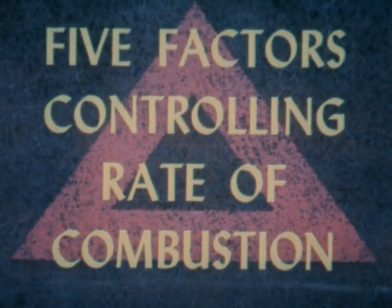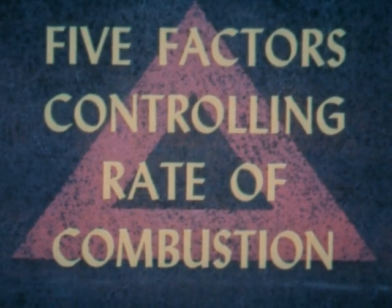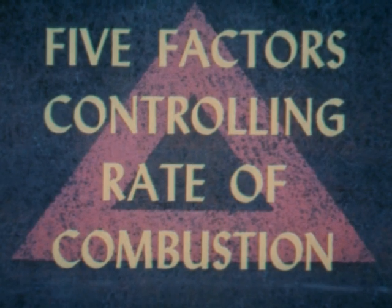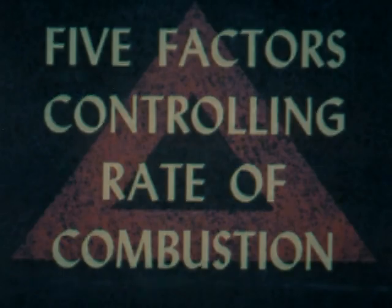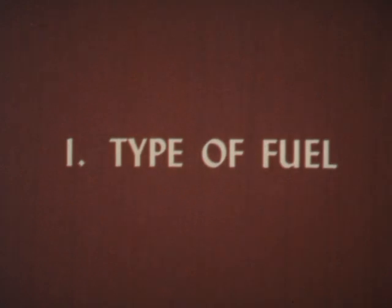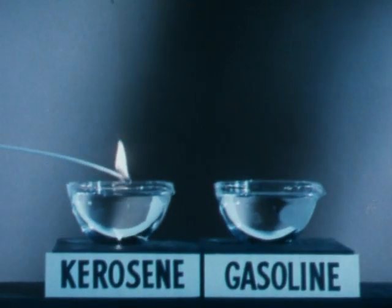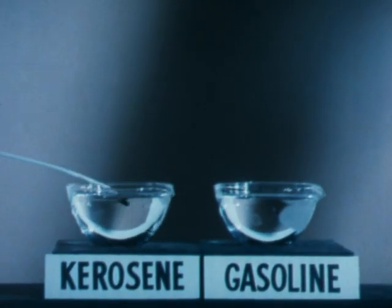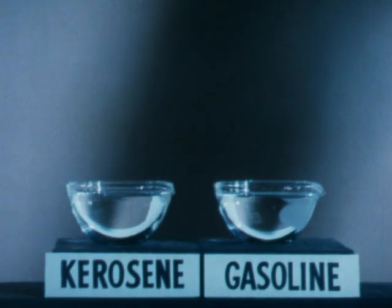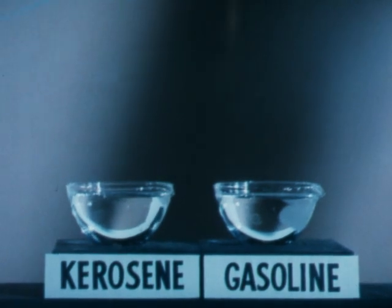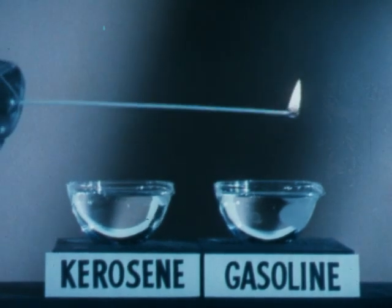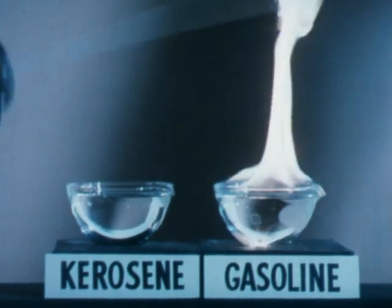There are five factors controlling the rate of combustion. One: type of fuel. As an example, a flame that will not ignite kerosene causes gasoline to ignite immediately and burn.